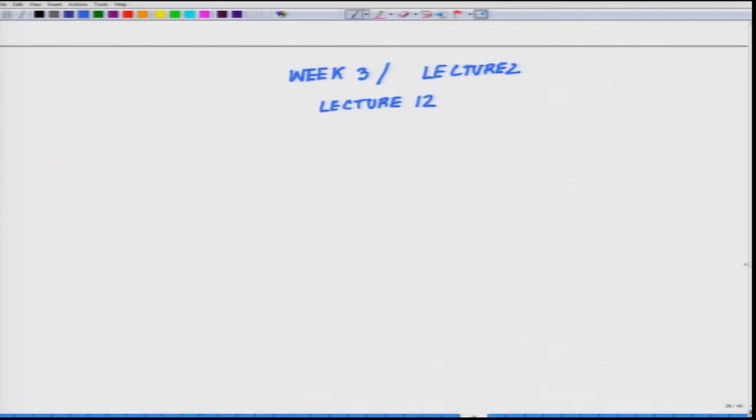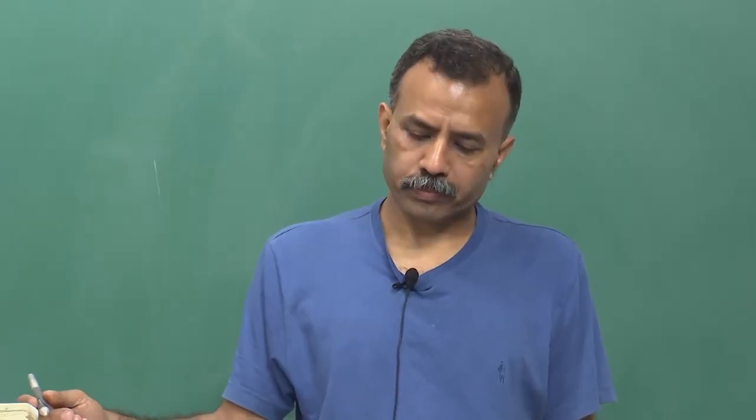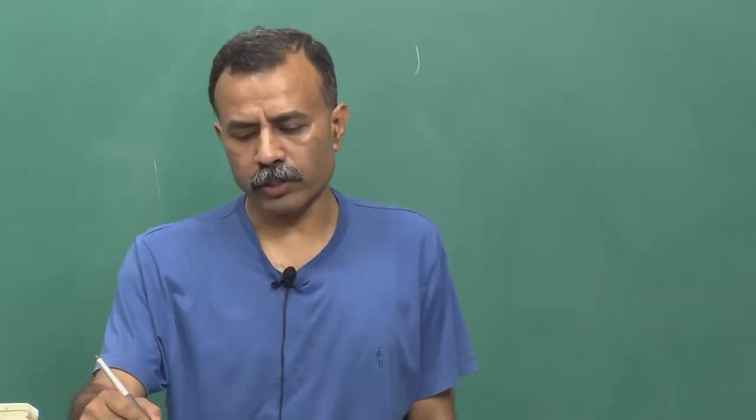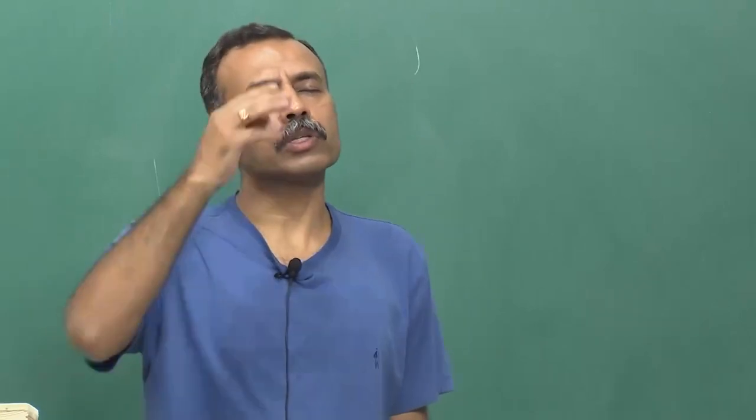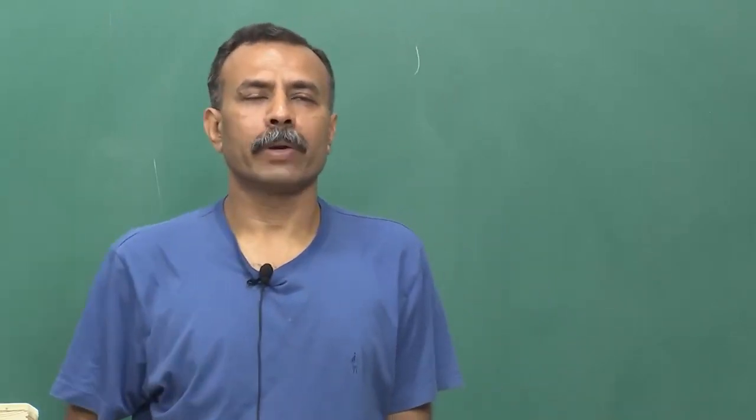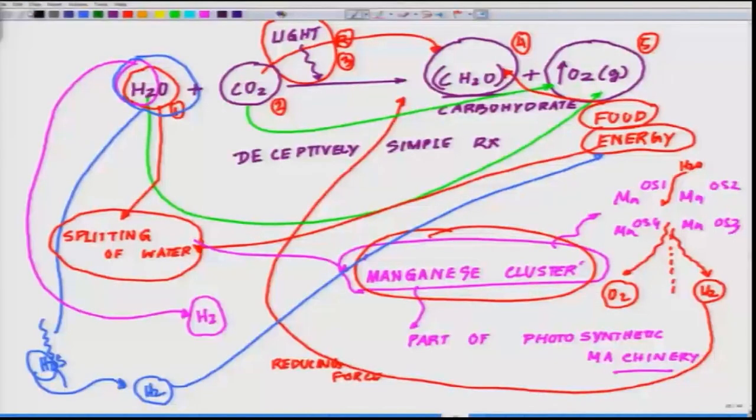In the previous lecture, we talked about the deceptively simple reaction of photosynthesis where you saw the water molecule react with carbon dioxide leading to the generation of carbohydrate, mostly sucrose and glucose, with oxygen as a byproduct. As a matter of fact, one thing I did not mention is the first kind of photosynthesis never used water, it was using H2S. I have already highlighted that part in the previous class.